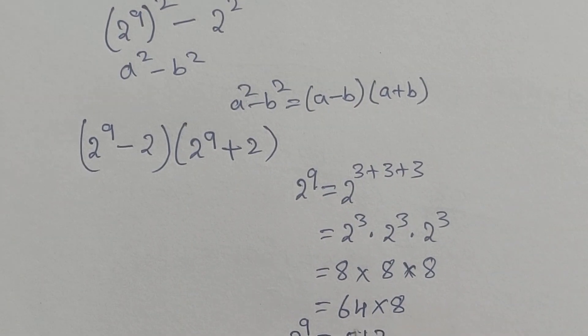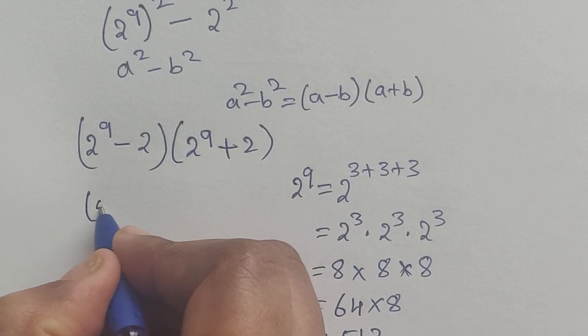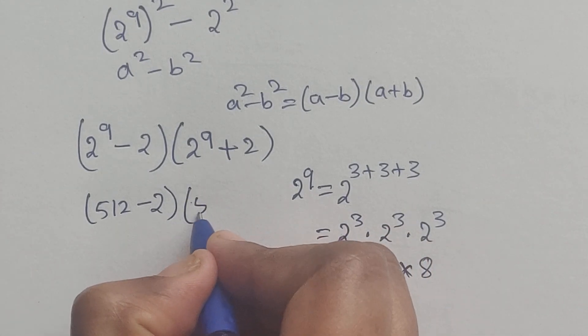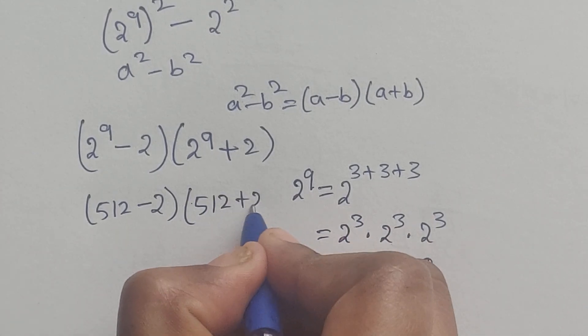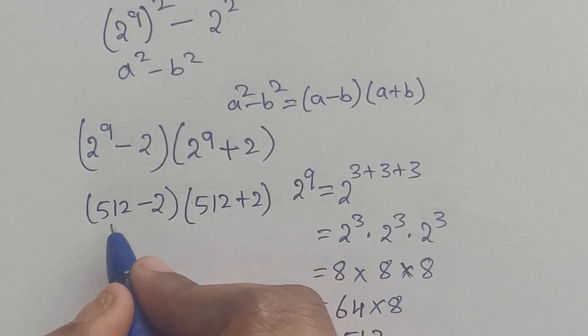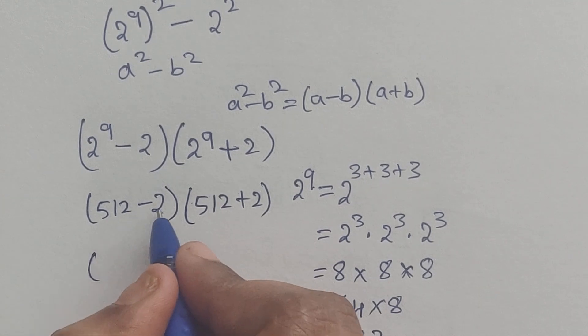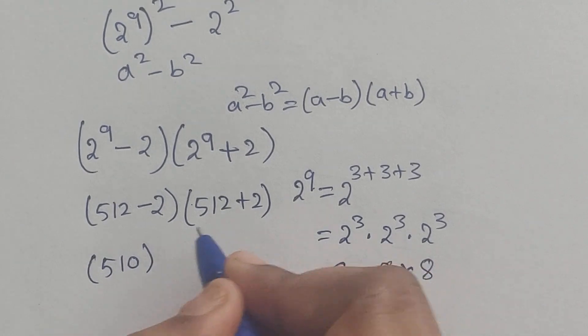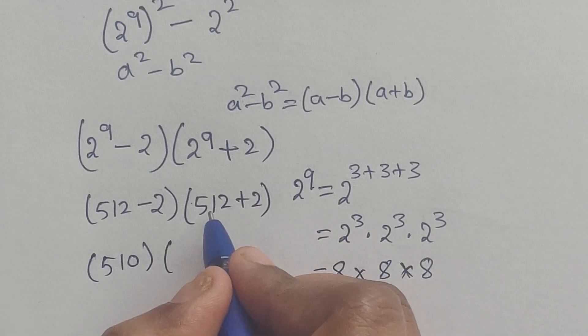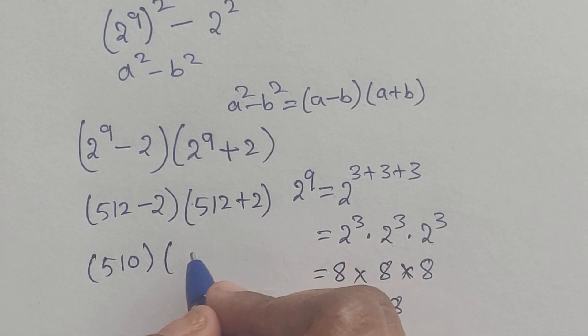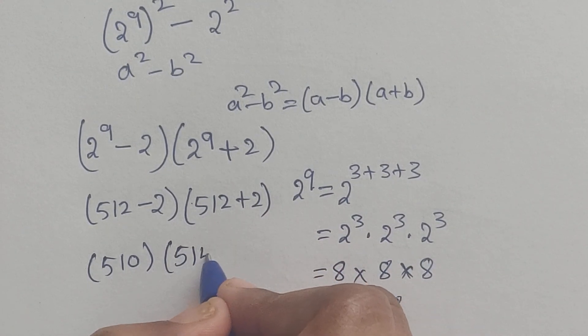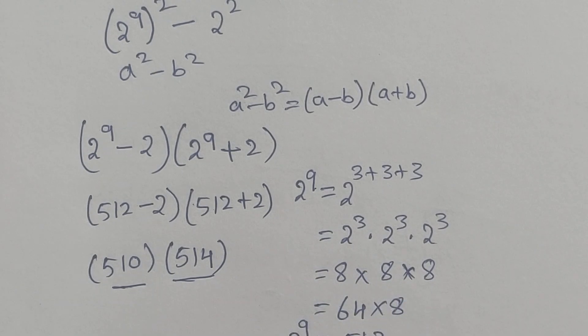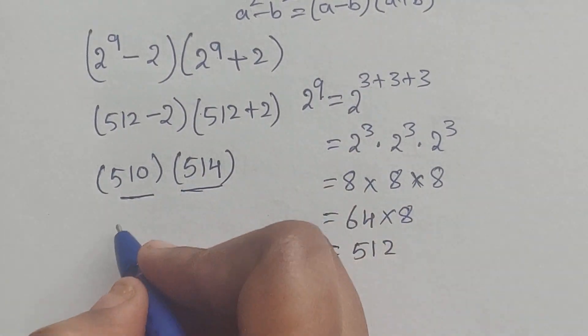Write this value here: 512 minus 2 times 512 plus 2. So 512 minus 2 equals 510, and 512 plus 2 equals 514. Now multiply these two values.